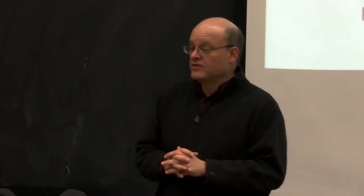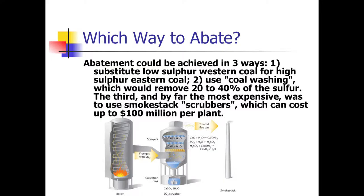There was one set of laws in the 1970 Clean Air Act, but in 1979 there was a push to change the law. The reason for pushing to change the law was to protect the jobs of eastern coal miners. The coal emits sulfur dioxide and you could deal with this three ways.